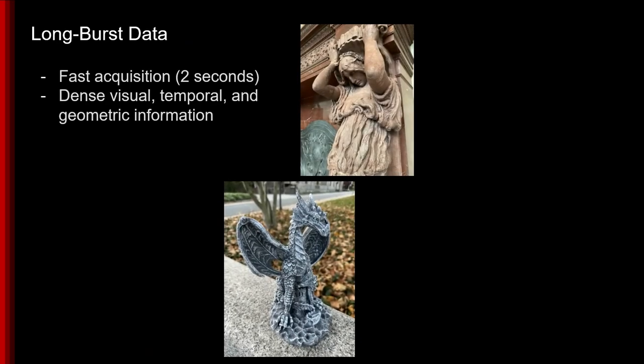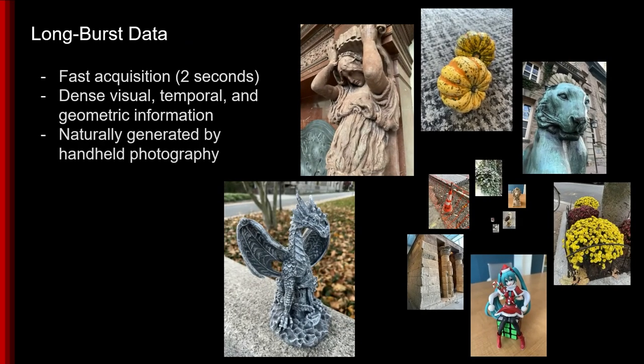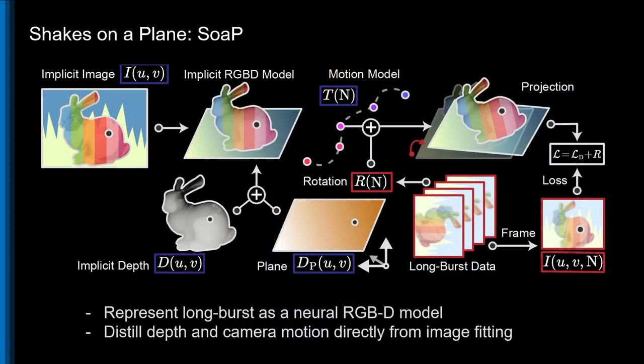In this work, we look at long bursts, 2-second, 42-frame, high-resolution image sequences naturally produced during everyday photography, and we propose shakes on a plane, a neural RGB plus depth representation of this data.